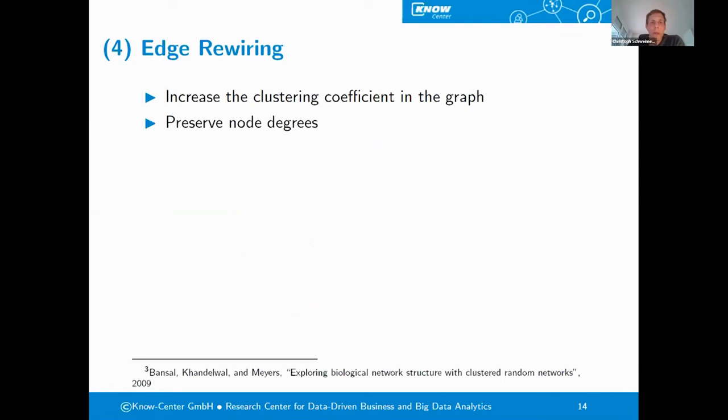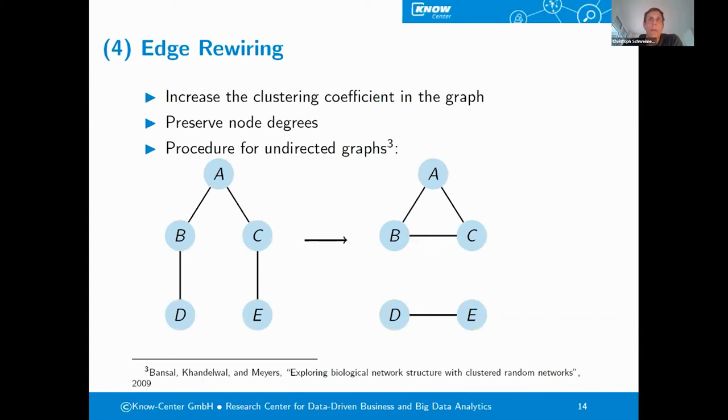I want to depict the idea at the hand of a snapshot of an undirected graph. We are always rewiring two edges at a time to preserve the node degrees, because if we were to only rewire one edge, for instance, taking the edge between the two nodes B and D here on the left-hand side, and rewiring this edge to be the edge BC, then we would alter the sampled node degrees. What we are doing is, we are looking at one node at a time, two unconnected first-degree neighbors, and then two unconnected second-degree neighbors. We rewire the edges that are vertical here in this figure for basically the horizontal edges. This then increases the clustering coefficient of the node A, and this procedure is repeated for a selected number of nodes. This concludes the graph generation method.